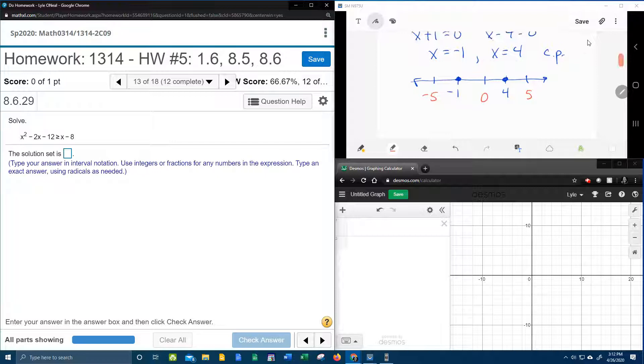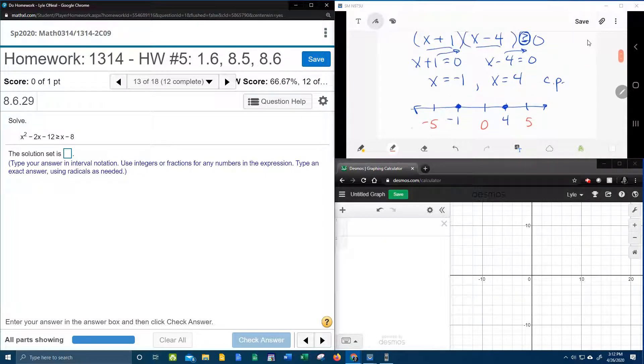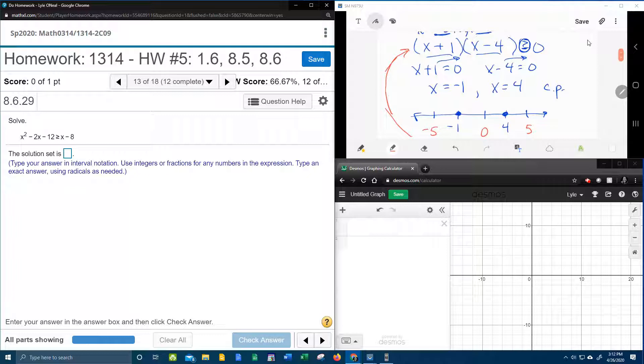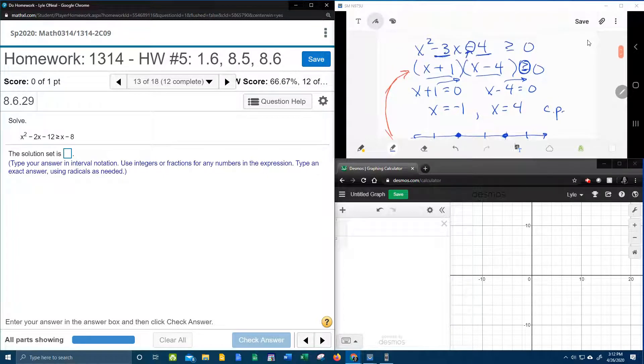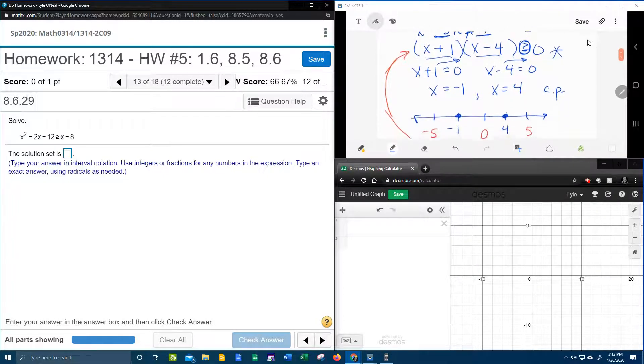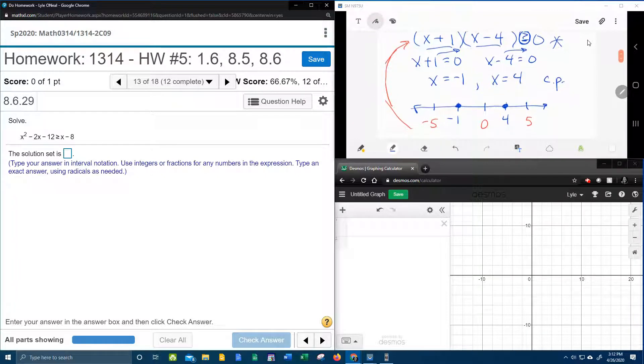And then what I want to do is I want to take these test points back to the factored form, and I'm going to test them to see if we get a true or a false statement. So we're going to plug our test points back into the inequality. I like to go where it's factored because it's a little bit easier to test.